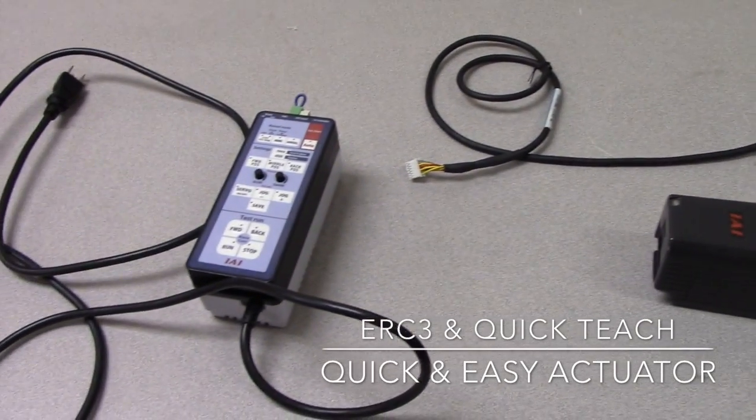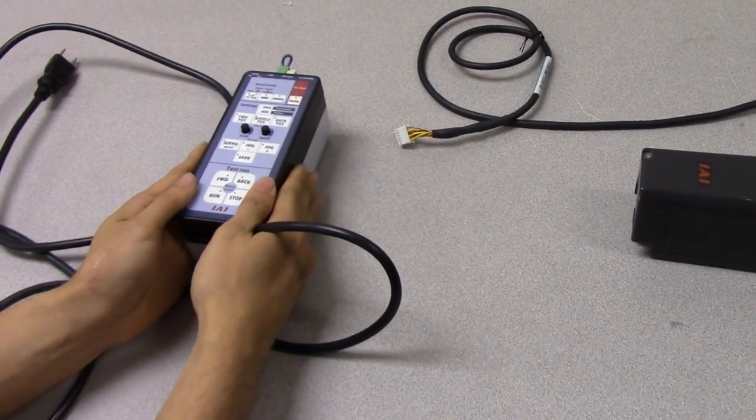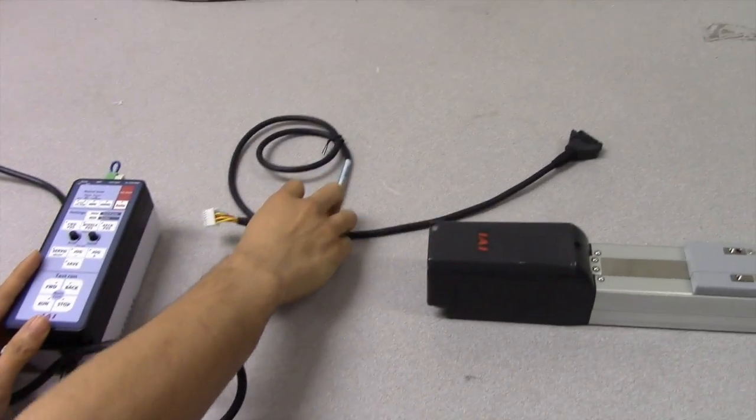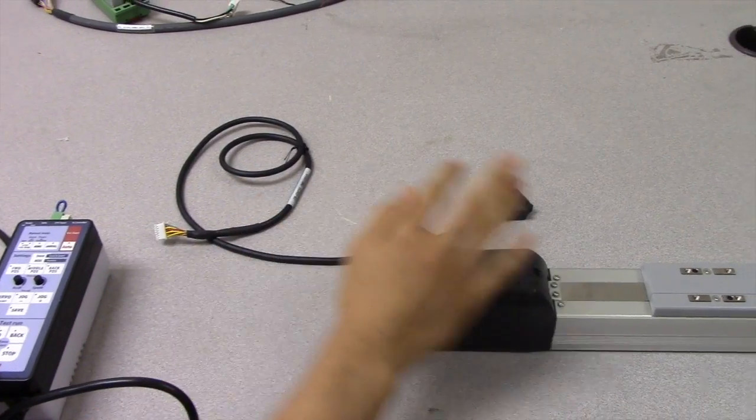So, we have three parts here. This is the teaching device with the power supply units attached, and we have a motor encoder cable that's going to plug into the actuator here.